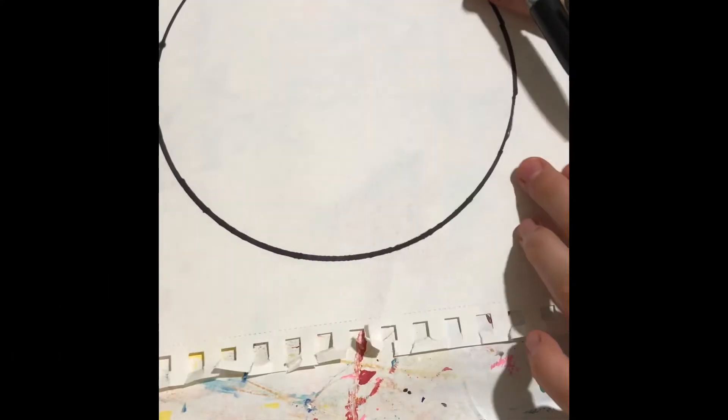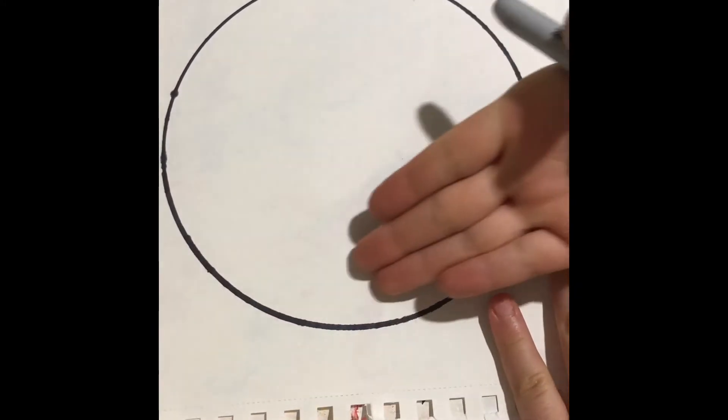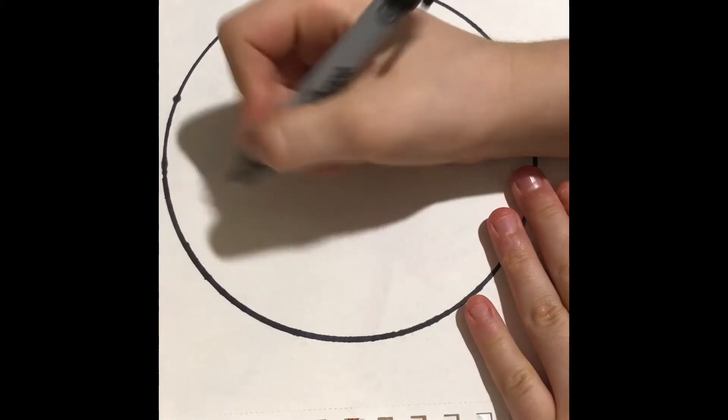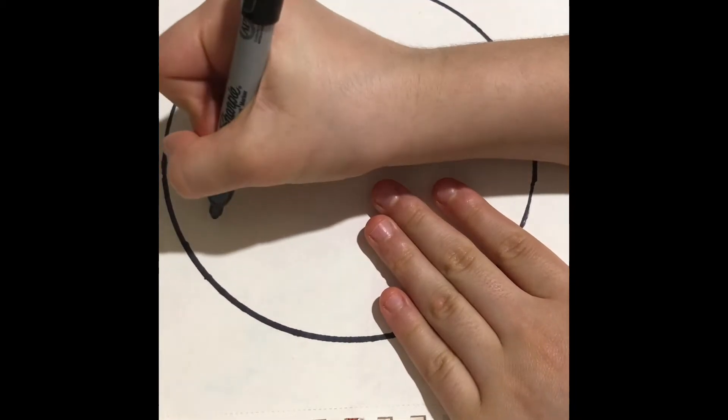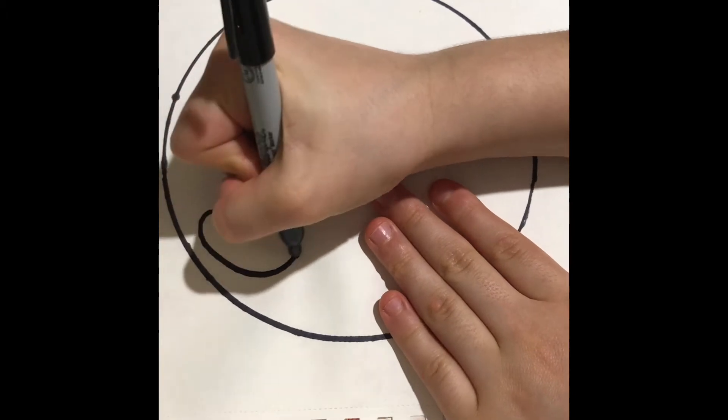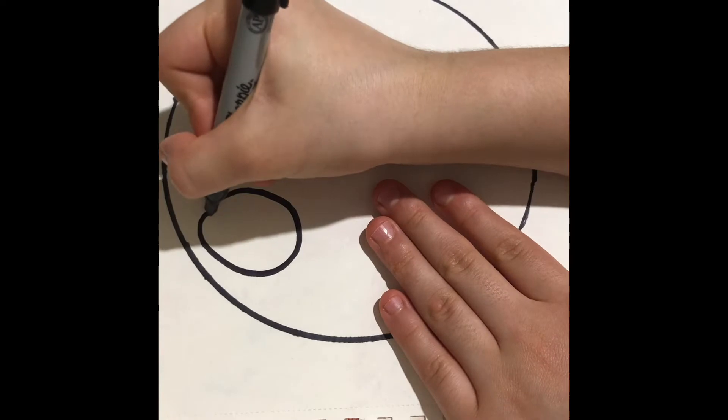There you go, you have your circle. All right guys, now that you have your circle we're gonna start with the face. So what we're gonna do is we're gonna start with the eye. To make the eye we're gonna make a circle just like this, it's gonna be a pretty big circle.